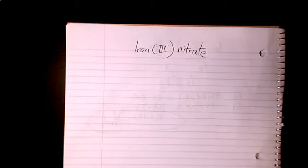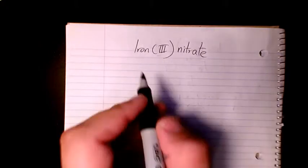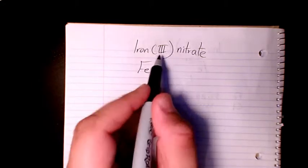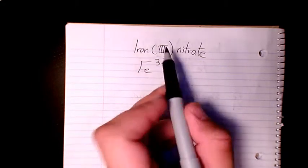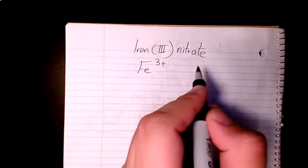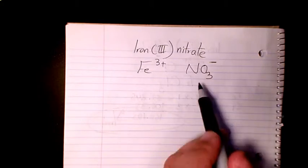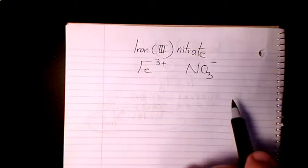So first of all, I will start with the molecular formula. Iron is Fe and the charge of Fe in this case, because we have three here, is 3+. And nitrate is a polyatomic ion, NO3, and the charge is negative one. That's the polyatomic ion nitrate.